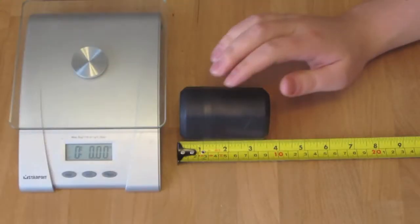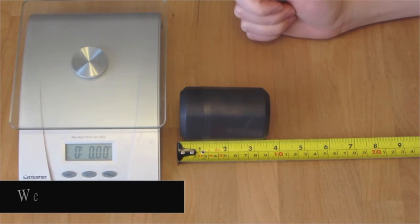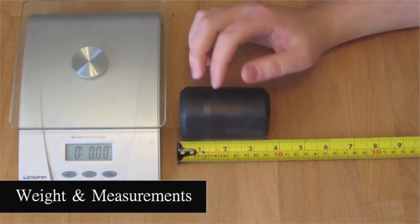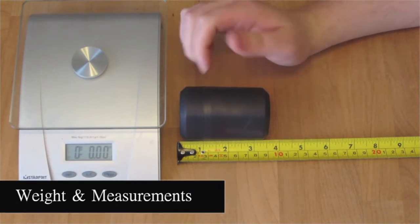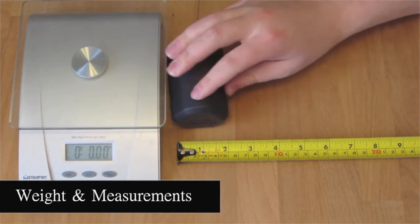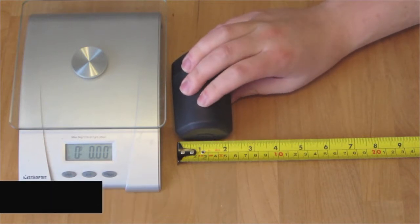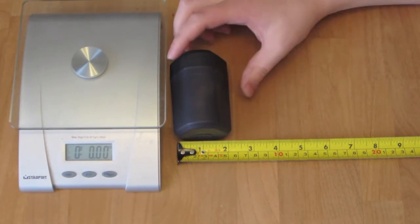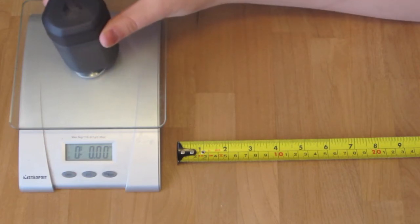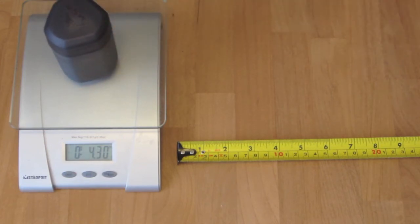So we'll start off with just the basic measurements and the weight. Okay so I've got the micro rocket set up here with the measuring tape and the scale. In the case we're looking at about 3.5 inches wide. And it's just a little over 2 inches this way.